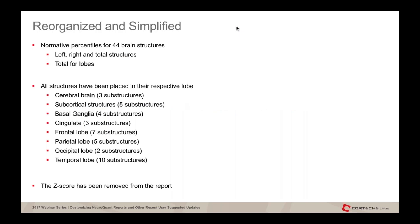Let's start with the triage brain atrophy report. You might have noticed that since we upgraded our online system to 2.3 several weeks ago, there are several new structures. We went from 39 to 44 brain structures. We are now displaying not only the left and right values but also the values for the total structure. The five added structures are all total lobes, placed in their respective lobes: three cerebral brain substructures, five subcortical, four in the basal ganglia, three in cingulate, seven in the frontal lobe, five in the parietal lobe, two in the occipital, and ten in the temporal lobe.